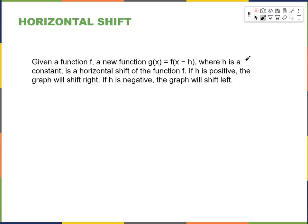Next, horizontal shift. Given a function f, a new function g of x equals f of x minus h, where h is a constant, is a horizontal shift of the function f. If h is positive, the graph will shift right. If h is negative, the graph will shift left.